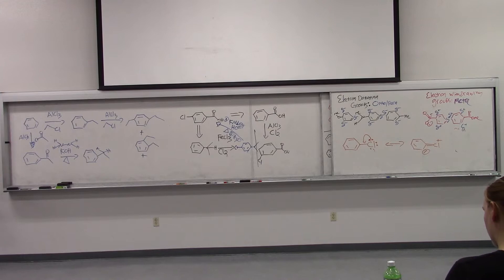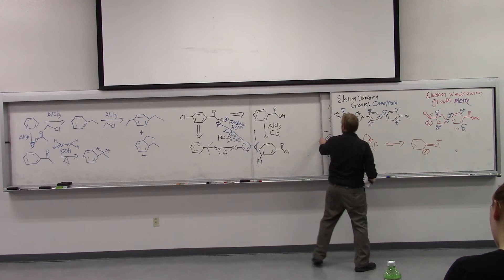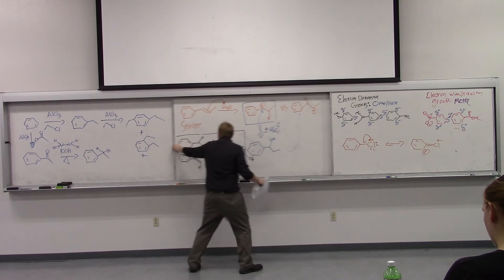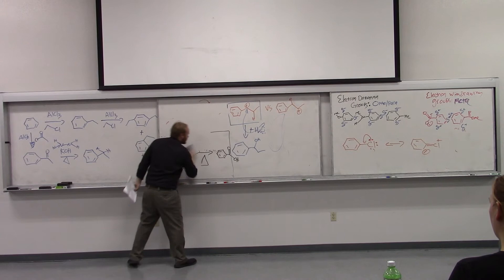So if you want to do a monofunctionalization, electrophilic aromatic substitution, that gives us an alkyl group, one way you want to consider is doing the Friedel-Crafts acylation, followed by the reduction to the CH2.